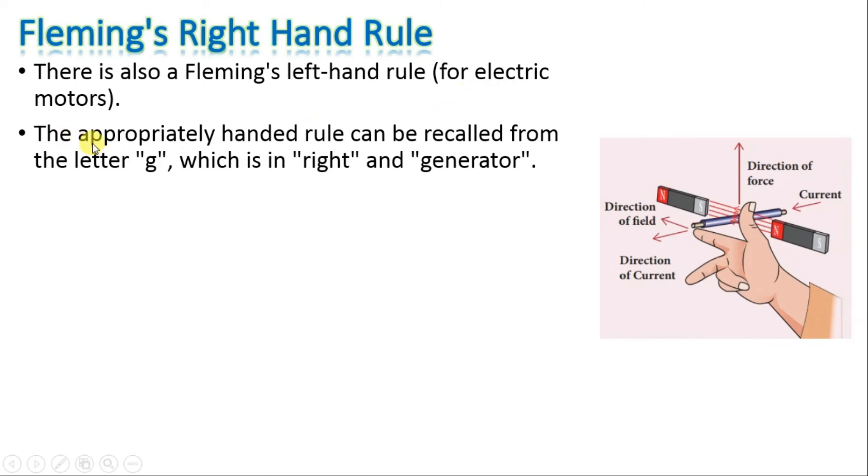Now to remember whether right-hand rule or left-hand rule is applicable to generator, the appropriately handed rule can be recalled from the letter G which is in the right. The right word has G, and G for generator.